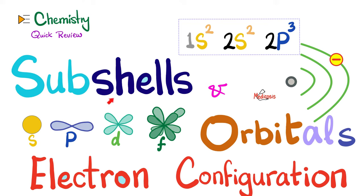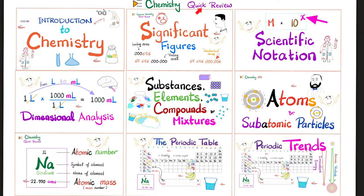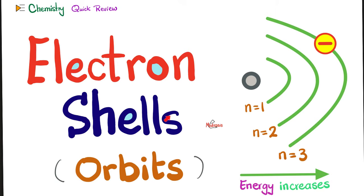What are the sub-shells? We have the S sub-shell, P sub-shell, D sub-shell, and the F sub-shell. As for the orbitals, please remember that each orbital can carry a maximum number of two electrons only. I hope that you watch the videos in this Chemistry Quick Review playlist in order for maximum understanding and retention, especially the last video on electron shells.